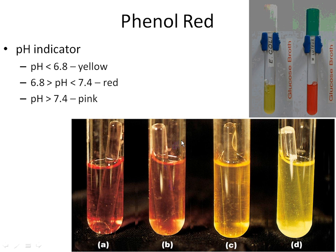Our first media we're going to discuss today is called phenol red broth. Just from the name, you should be able to conclude it's obviously going to be red — it's got phenol red in it, and it's a broth, so it's going to be a liquid. Phenol red is actually a pH indicator — simply a color added to the media. At higher pH, the media turns red and pink; at lower pH, the media turns yellow. This pH indicator alone can't tell us anything about the bacteria, but we can couple this color change to fermentation or metabolism with the bacteria.